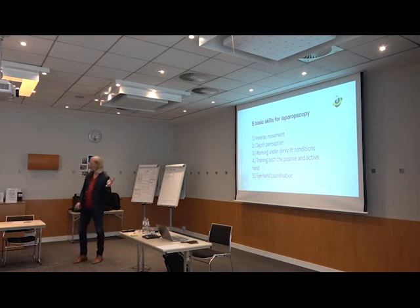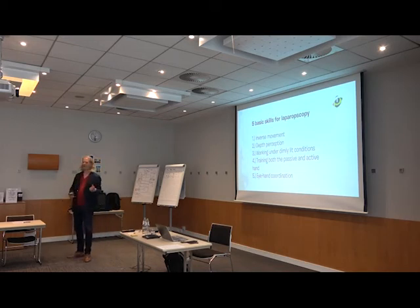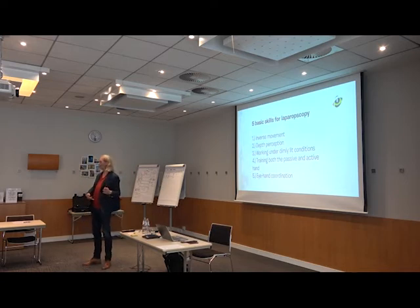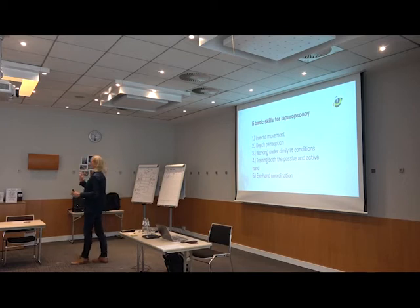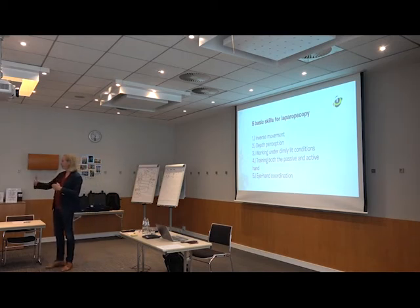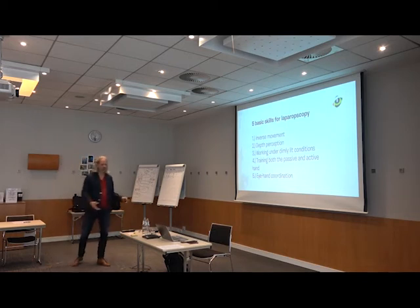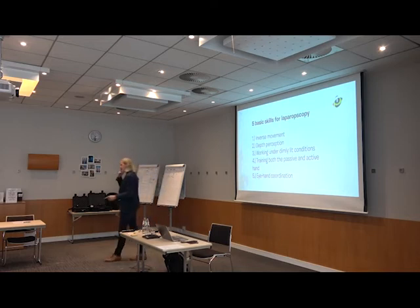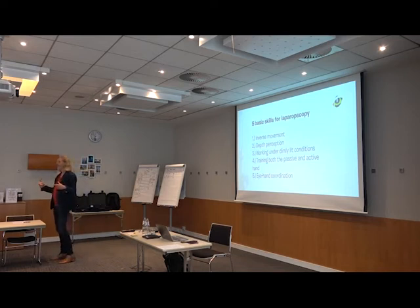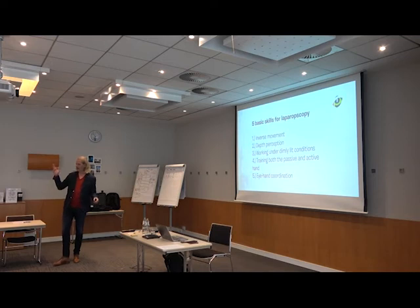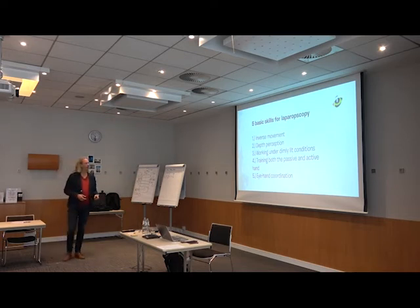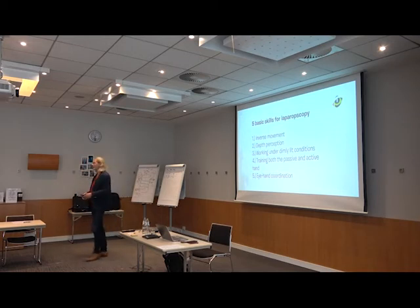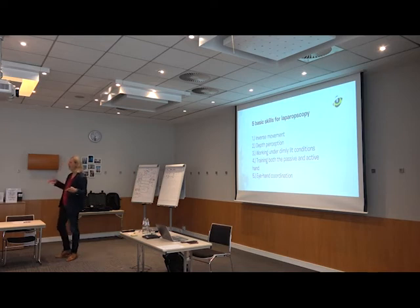There are no shadows in laparoscopic surgery because the camera lens underneath the navel also houses the light source aimed directly at what you're operating on, so shadows cast directly behind it. Normally, you use shadows to judge how close you are to an object. Without that depth cue — for instance during coagulation when a tool becomes very hot — you might accidentally hit a liver instead of the gallbladder, creating collateral damage. The same issue applies to working in dimly lit conditions.